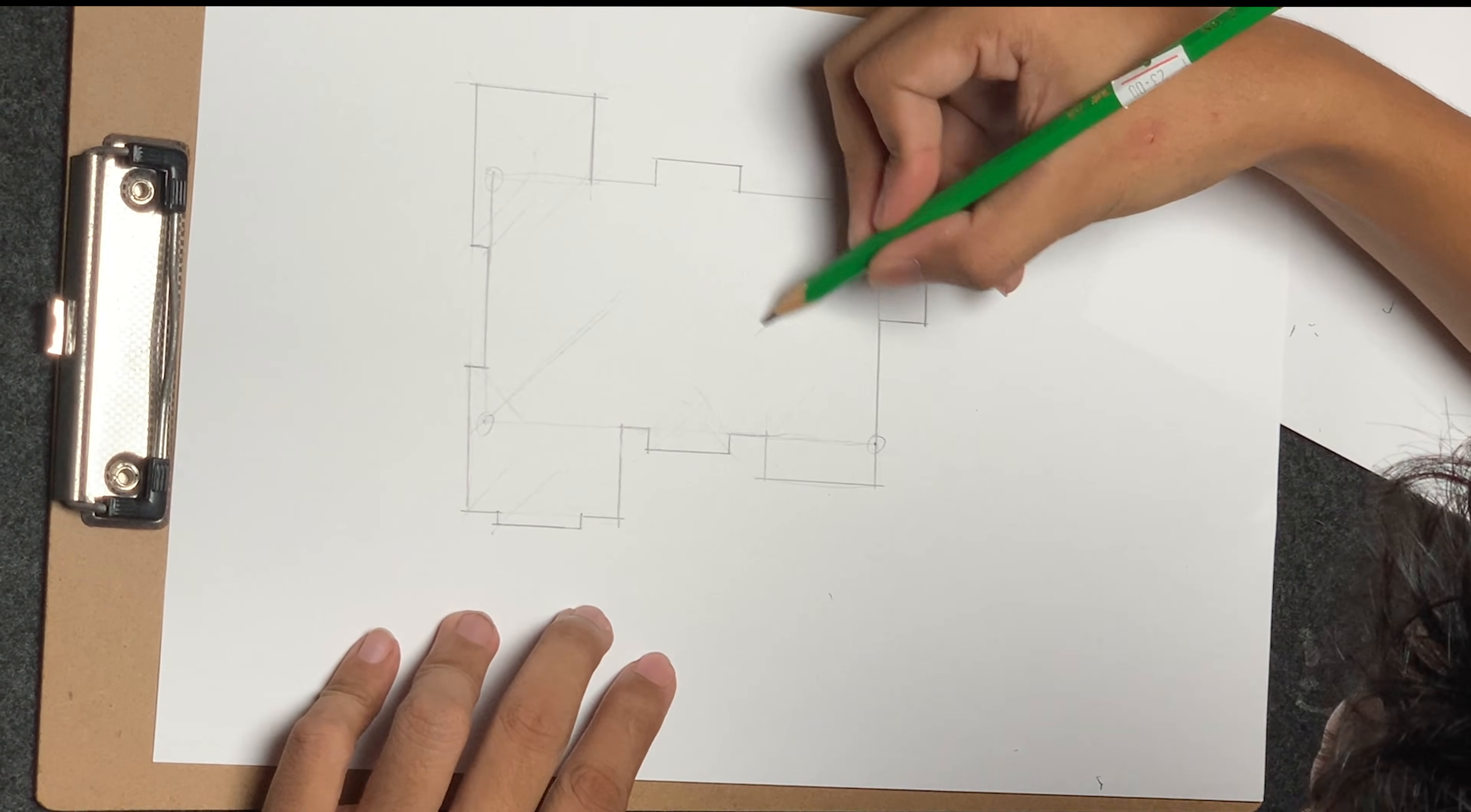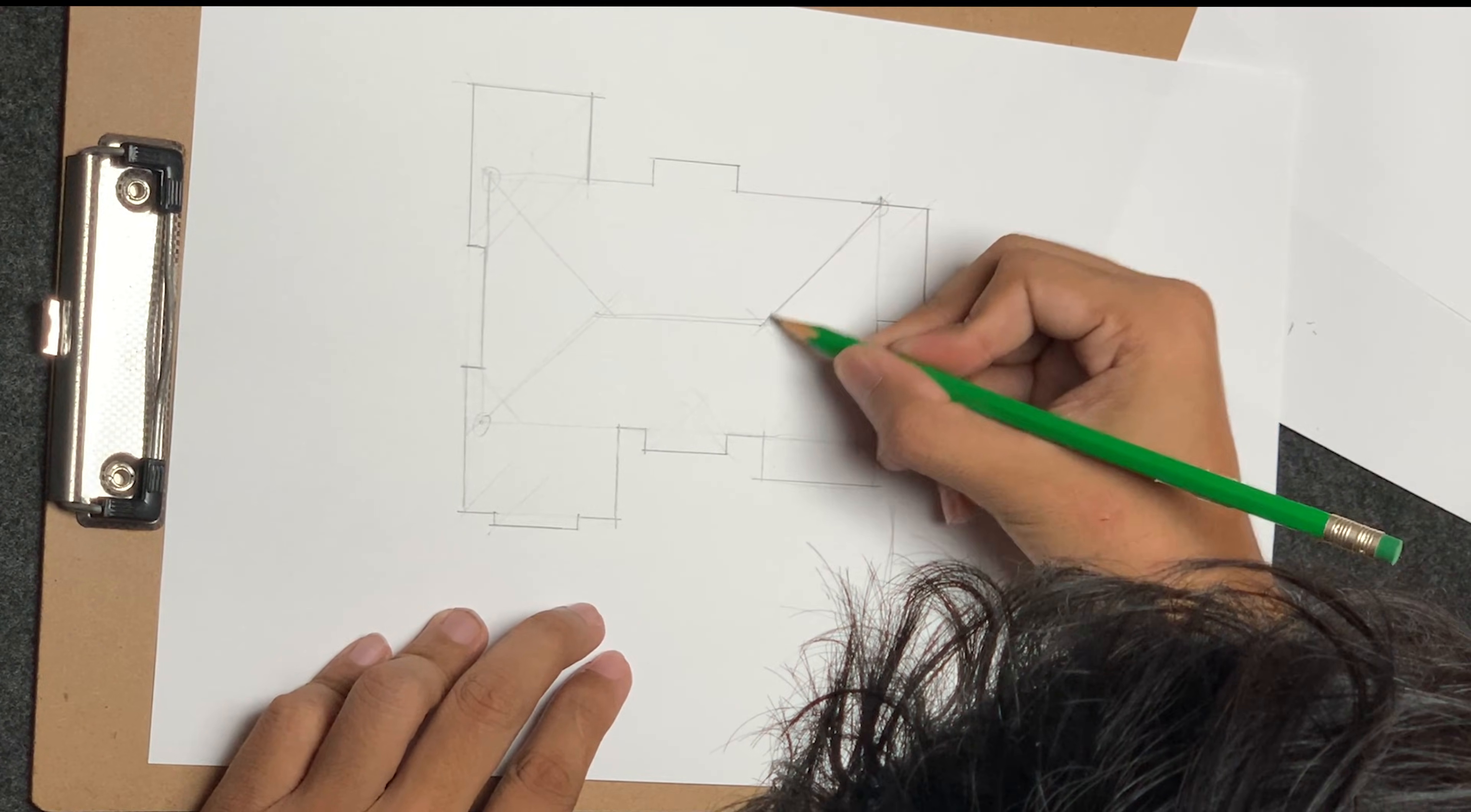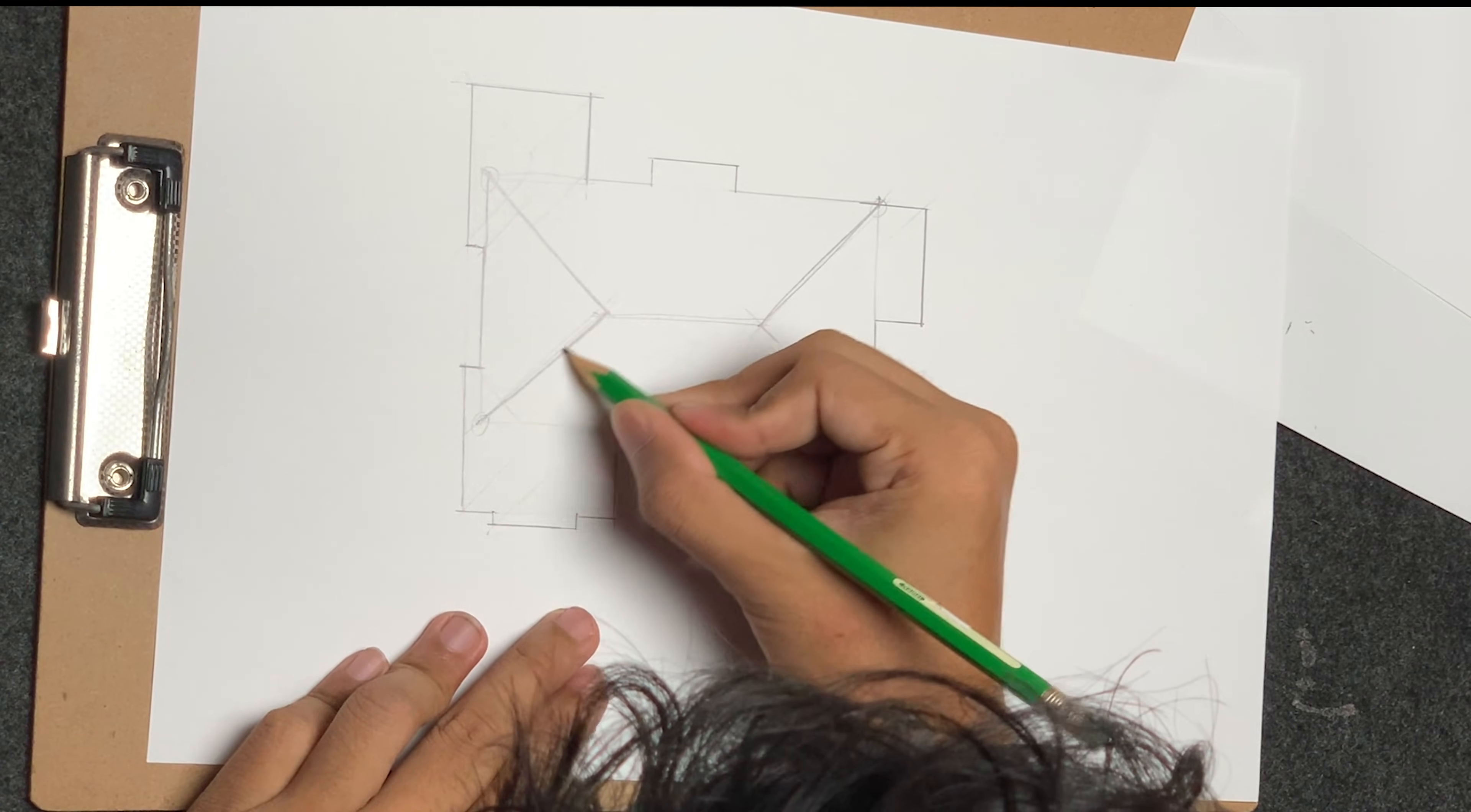Now let's connect it with the 45. 45, 45, 45, 45, 45, and the main ridge. This is going to be the main roof of the house. Everything is going to start easy by now.